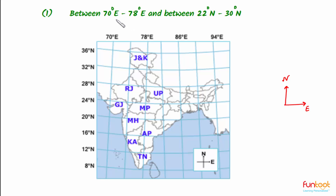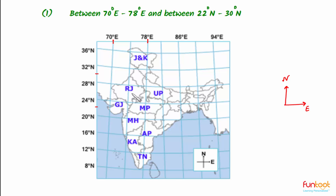Let's locate the state lying completely between 70 degrees east and 78 degrees east, and between 22 degrees north and 30 degrees north. Drawing these boundary lines on the map, we get 22 degrees north and 30 degrees north. We can very easily see that the state lying between these latitudes and longitudes is Rajasthan. So the first answer is Rajasthan.